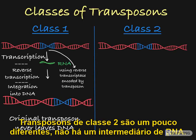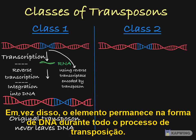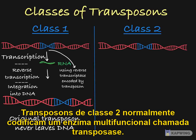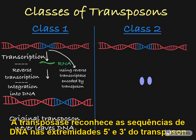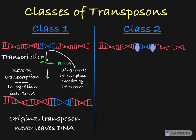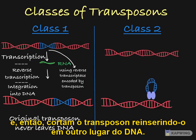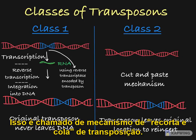Class II transposons are a little different. There is no RNA intermediate. Instead, the element remains in DNA form throughout the process of transposition. Class II transposons typically encode a multifunctional enzyme called transposase. Transposase recognizes the DNA sequences at the 3' and 5' ends of the transposon, and will cut the transposon out of the DNA and then reinsert it somewhere else in the DNA. This is called a cut-and-paste mechanism of transposition.